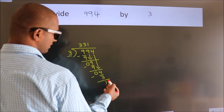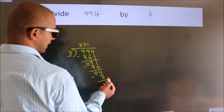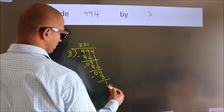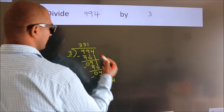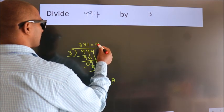After this, no more numbers to bring it down. So, we stop here. This is our remainder. This is our quotient.